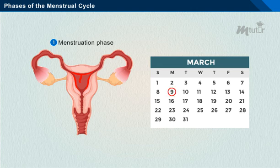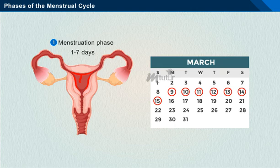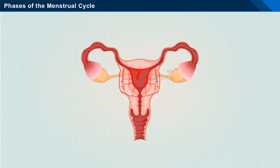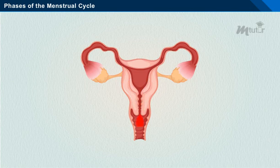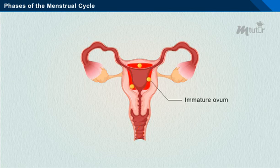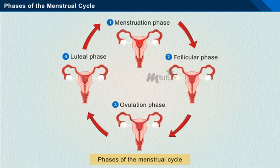The menstrual phase is the day when menstruation begins. It lasts for about 1 to 4 days; in some women, it may go up to 7 days. During the menstrual phase, the spiral arteries that supply blood to the endometrium of the uterus constrict. As a result, the endometrium breaks down and detaches from the inside of the uterus and passes out through the vagina. Also, the immature ovum in the uterus passes out along with the menstrual flow.